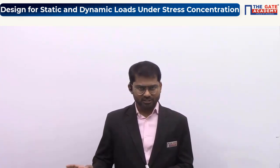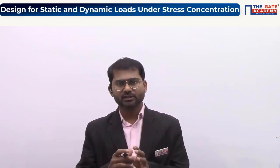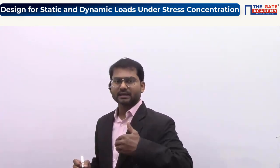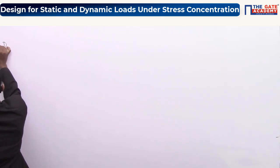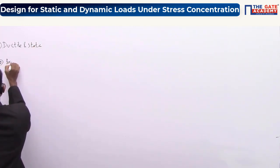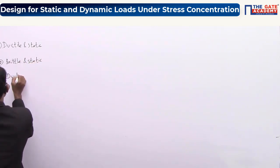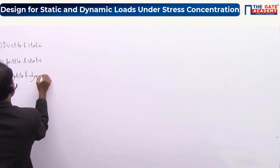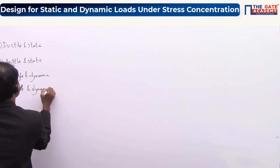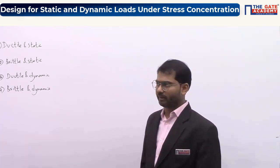This part of the concept is not well explained in the VB Bhandari textbook — it was explained in a jumbled way. I am going to explain the complete concept in tabular form so you have all the data on a single page. Listen carefully and do not miss what I am telling. The four cases are: ductile-static, brittle-static, ductile-dynamic, and brittle-dynamic.